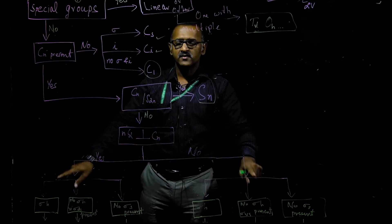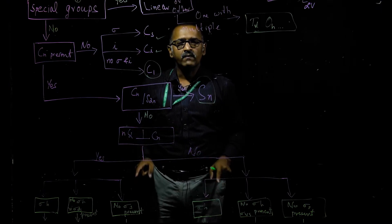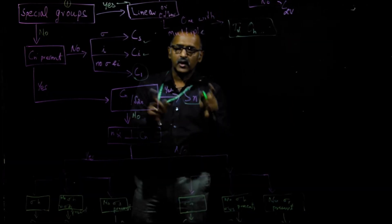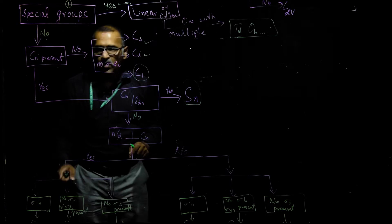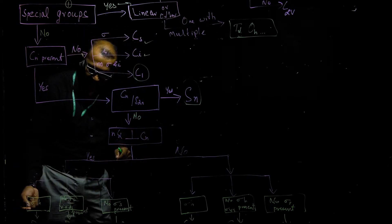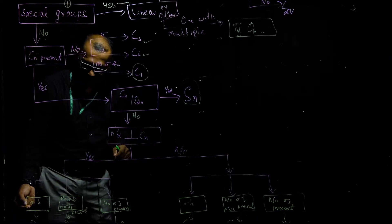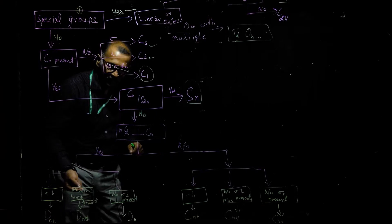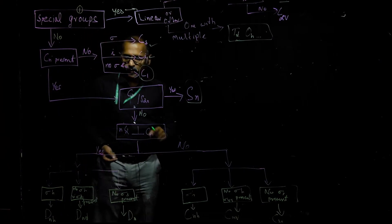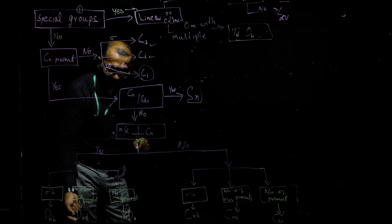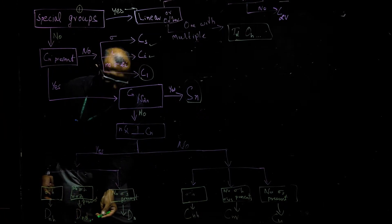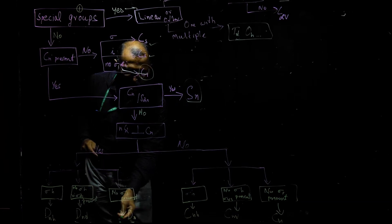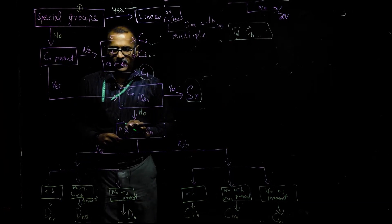This leads to the broad classification: if there are nC2 axes perpendicular to Cn and the molecule has a sigma H plane, the point group is Dnh. If there is no sigma H but sigma Ds (dihedral planes) are present — like benzene — it is Dnd. If no sigma planes are present at all, the point group is Dn.